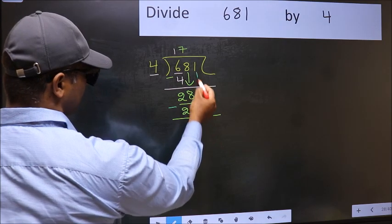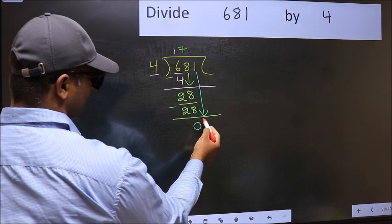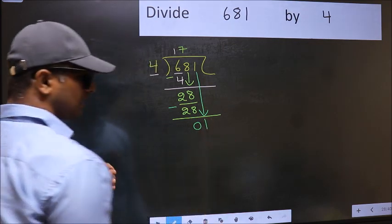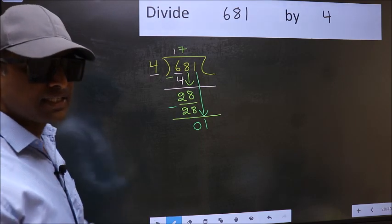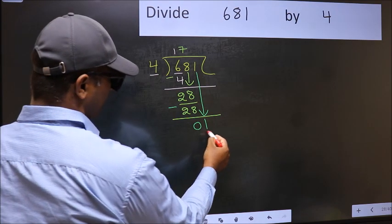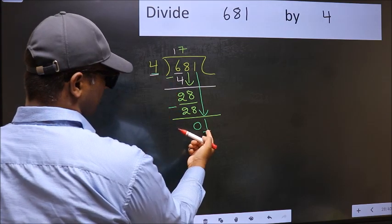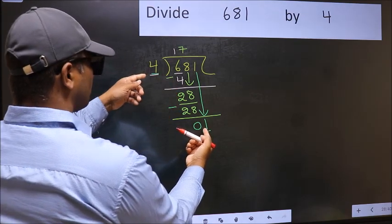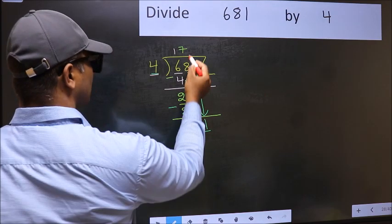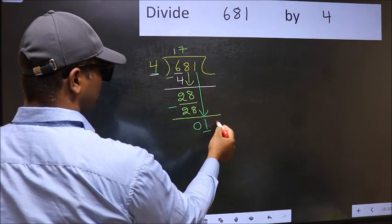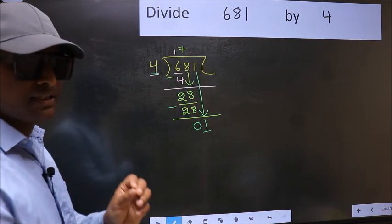After this, bring down the beside number. So 1 down. After this step, the mistake happens. And the mistake is this. Here we have 1 and here 4. 1 is smaller than 4. So what many do is they directly put a dot and take 0.